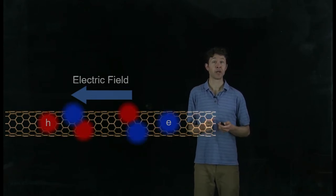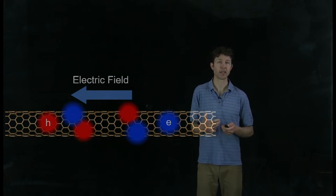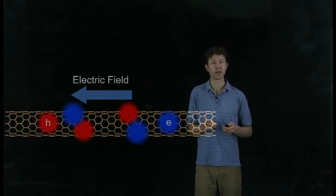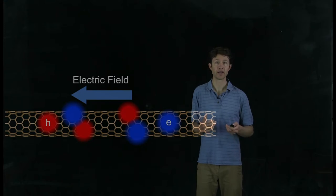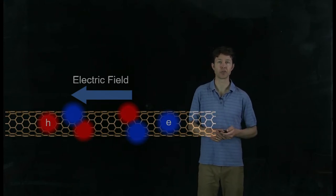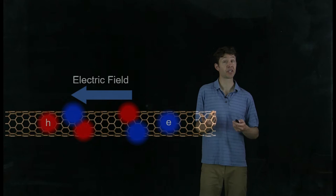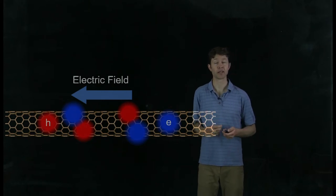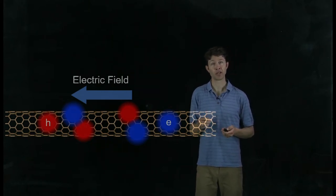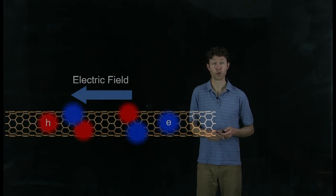theory predicts that there may be an impact ionization effect. This is an effect where one electron can multiply and excite more electron-hole pairs as it moves down through the carbon nanotube. This is the effect we're looking for, to try to break that limit of having only one electron come out for one photon being absorbed.